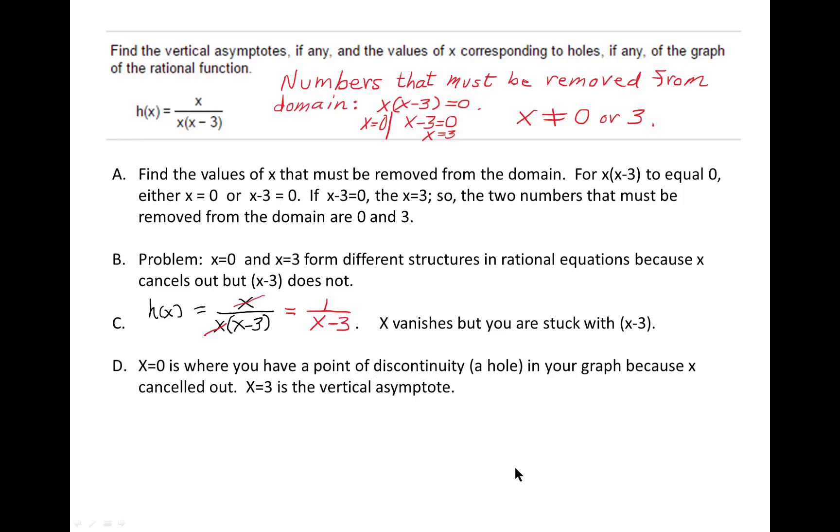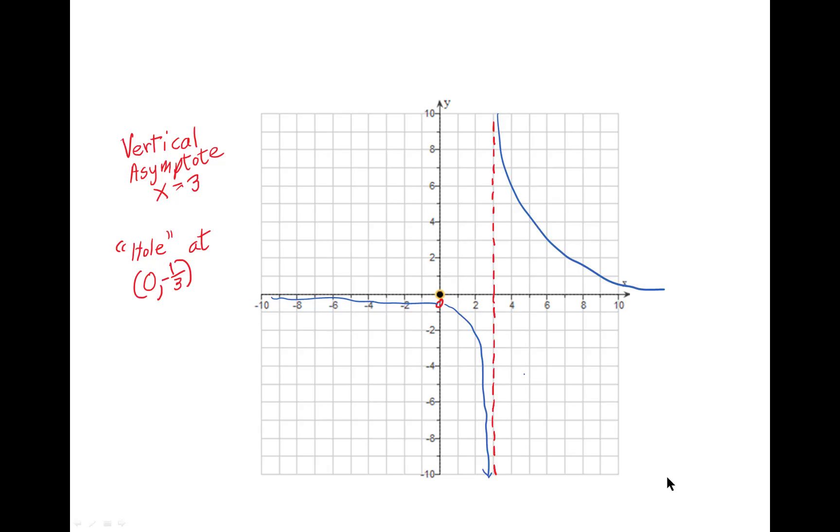Now, we're going to look at this. This is what the graph looks like. You have these two parts of the graph broken up by x equals 3. Remember, x cannot equal 3. Well, x cannot equal 0 either, but it doesn't form an asymptote because it cancels out.